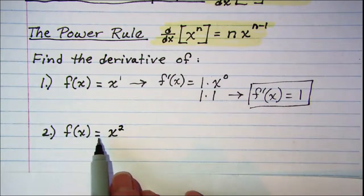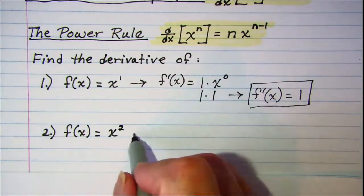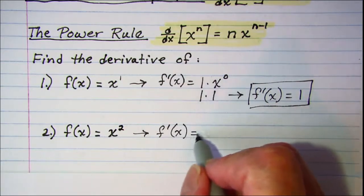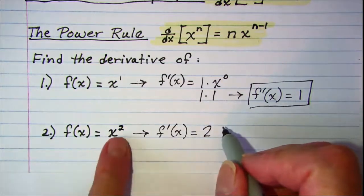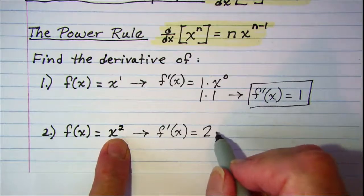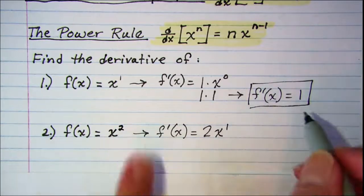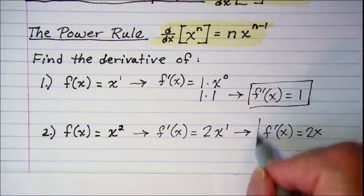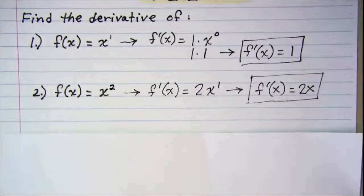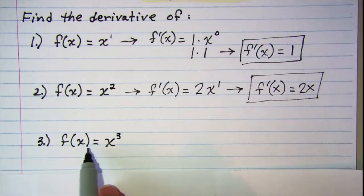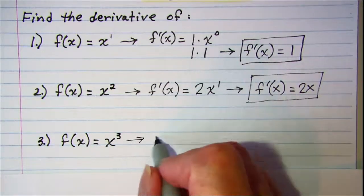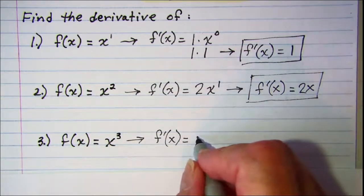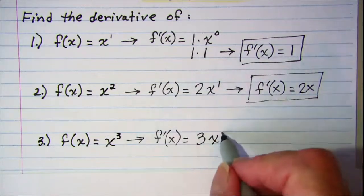We're asked to find the derivative of f(x) = x². Bring that exponent out in front: we have 2 multiplied by x, and when we reduce the exponent by 1, x is now to the first power, so this can be rewritten as 2x. To find the derivative of f(x) = x³, bring the exponent out in front using the power rule, giving us 3 times x to the second power.